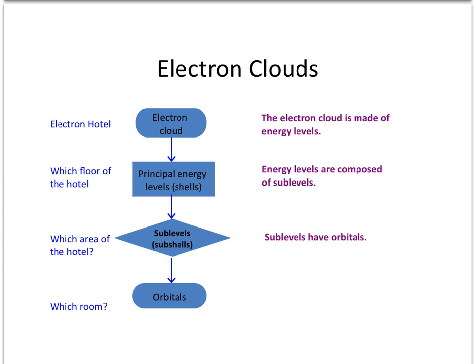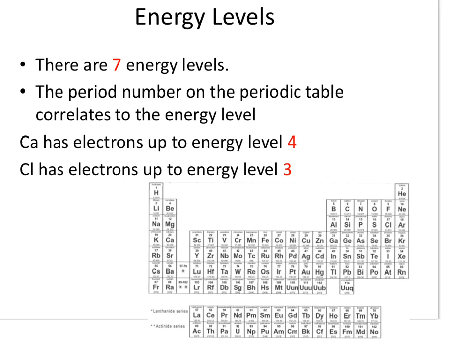There are only seven energy levels within the atom. We're going to use the periodic table as a tool to help us with electron configuration. Each row on the periodic table, which is called a period, is going to correlate to an energy level. On your periodic table, write in the seven energy levels, or the seven rows.